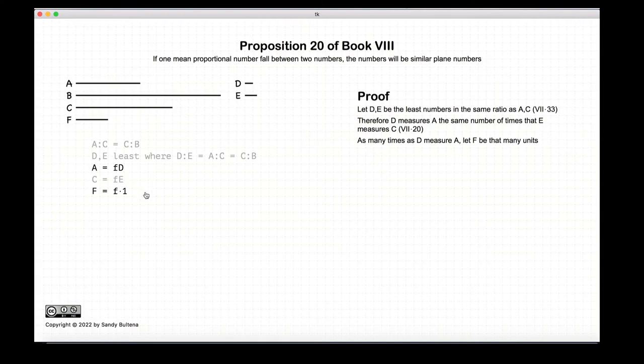Now, because this is Euclid, he makes a distinction between units and numbers, or measures and numbers. So, I'm trying to be as true as I can to the actual translation from Heath. So we construct the number F by saying that if D measures A F times, then the unit 1 measures F F times. Like I said, this seems a bit redundant in our modern math, but I'm trying to stay a little bit true to Euclid's proofs. So we basically have F is now a number and not a measure.